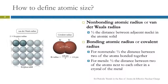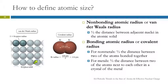So there are a couple of different methods. You could look at the non-bonding atomic radius, also known as the van der Waals radius. We get that by looking at an atomic solid, measuring the distance between two nuclei and dividing that in half. We say that must be the radius of the atom.